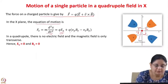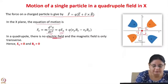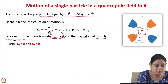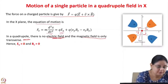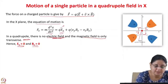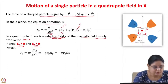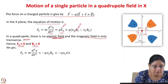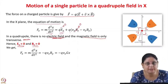In a quadrupole there is no electric field, only magnetic field, and the magnetic field is transverse only. There is no magnetic field in the z direction; we have only Bx and By. So we set Ex = 0 and Bz = 0, giving the equation of motion Fx = -QvzBy, where By = G·x and G is the magnetic field gradient.